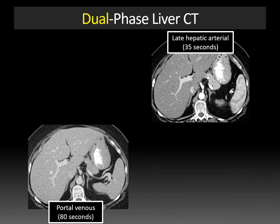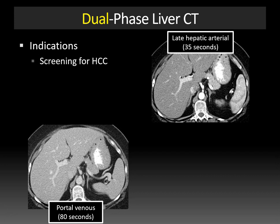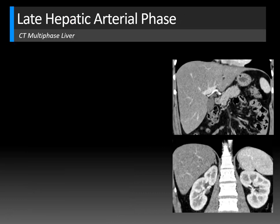You can also do a dual-phase or two-phase liver CT, typically for patients having screening for hepatocellular carcinoma, like patients with cirrhosis or hepatitis. Patients with abnormal LFTs might also benefit from this dual-phase reduced radiation study, where you eliminate the non-contrast and the delayed equilibrium phase series — you're just looking for any abnormal lesion.